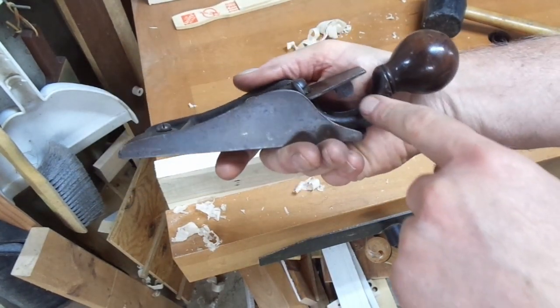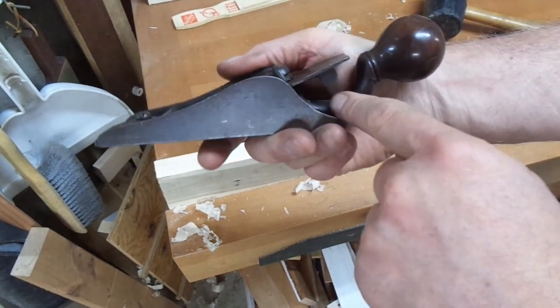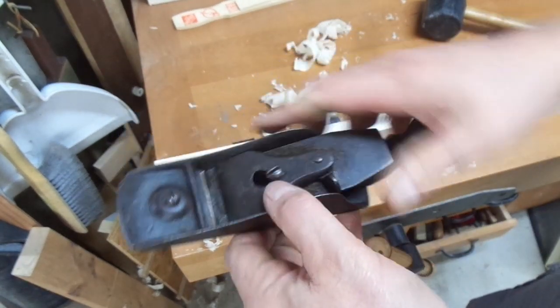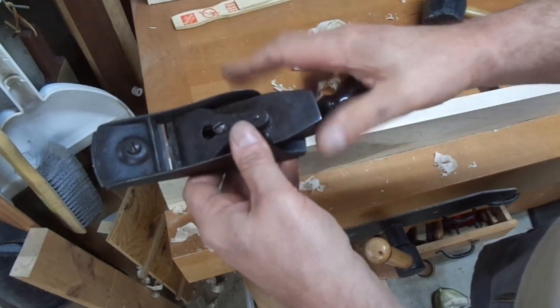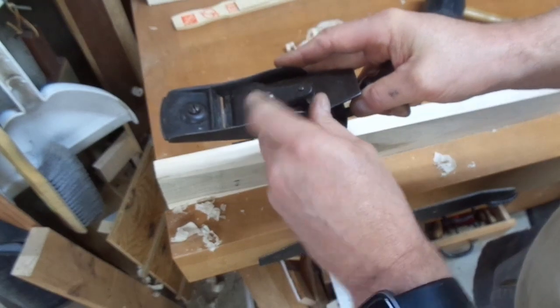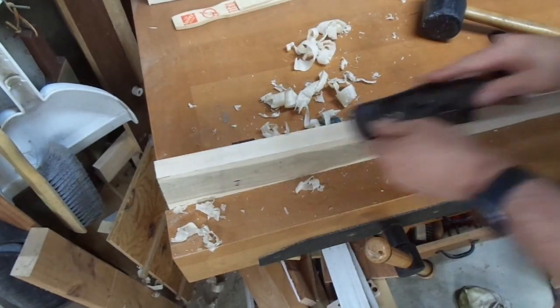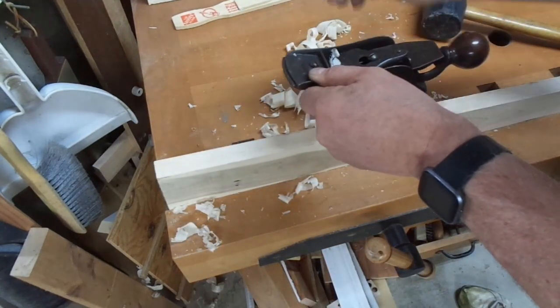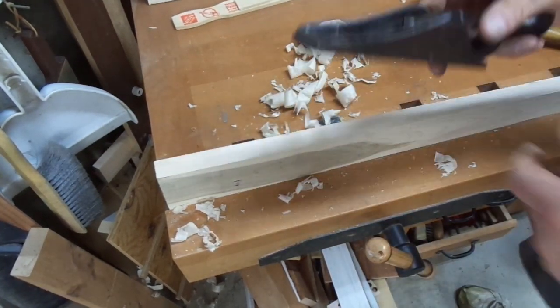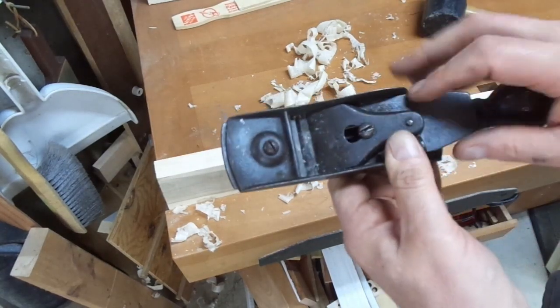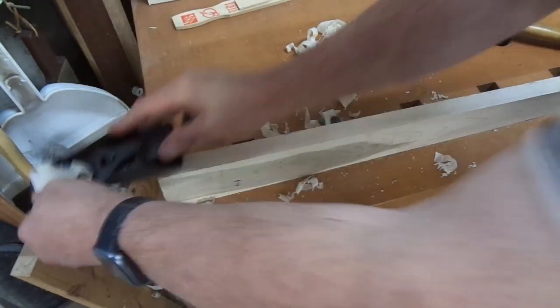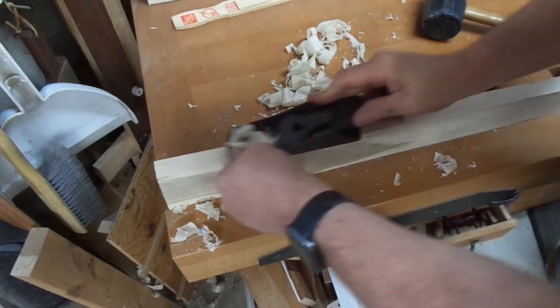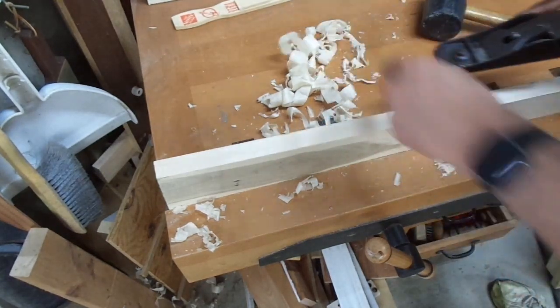I put the tail knob on and something you don't realize until you do it is it's harder to get to the depth adjustment lever with the tail knob in place. And it's a different feel to the plane. You tend to grab the tail knob back here and it's almost a two-hand operation. And I spent a little more time adjusting the iron with a couple taps of the hammer and the depth. And we're getting some pretty nice shavings.